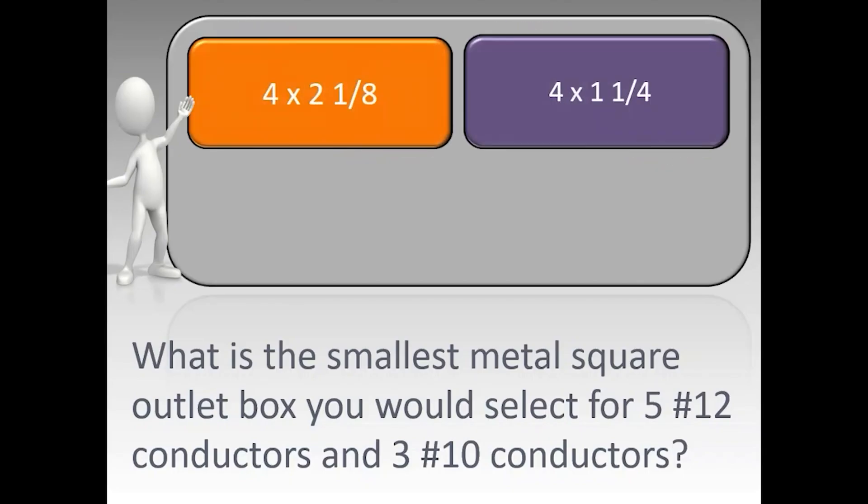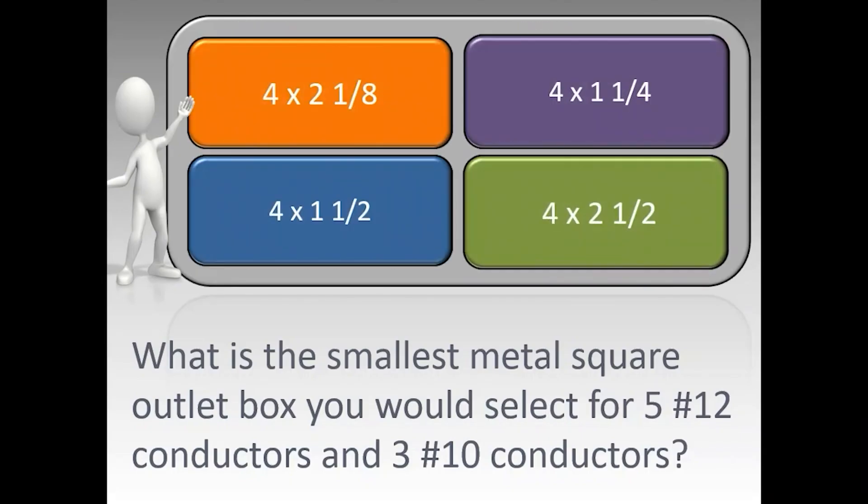What is the smallest metal square outlet box you would select for five number 12 conductors and three number 10 conductors? The correct answer is a four by one and a half.